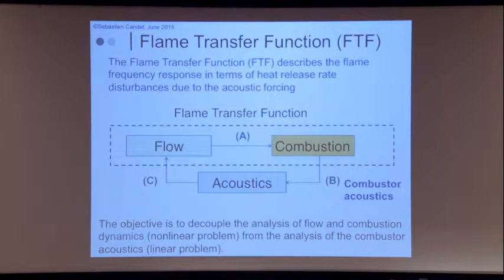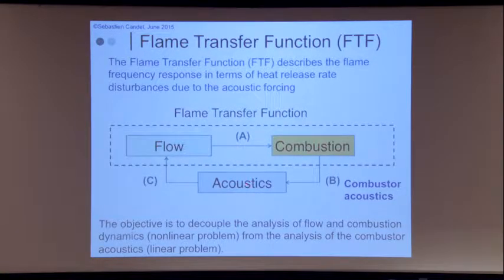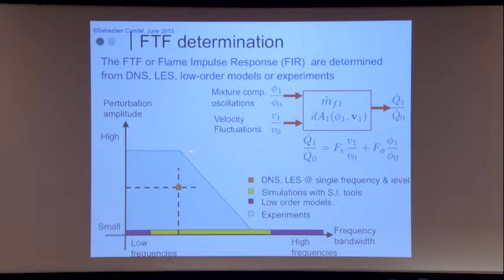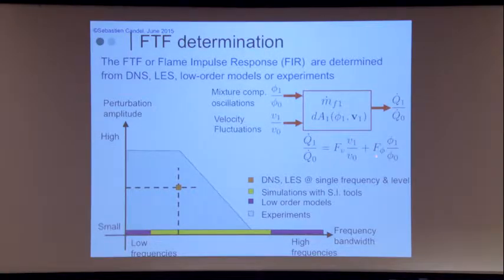What we are looking for is combustion — we've looked at this part of the loop. Now we look at the other part: combustion acoustics was our topic at the beginning, and here we want to see how the flow acts on combustion. We look at perturbations in mixture compositions and perturbations in velocity fluctuations. You have two transfer functions — phi1/phi0 and V1/V0 — acting very similarly.